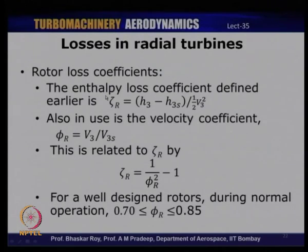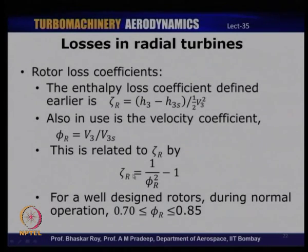For the rotor, loss coefficients are defined analogously: enthalpy loss coefficient ζR = (H3 − H3,s) / (½V3²); velocity coefficient φR = V3/V3,s; and ζR = (1/φR²) − 1. For a rotor, φR ranges between 0.7 to 0.85 — notably lower than the nozzle range of 0.9 to 0.97.